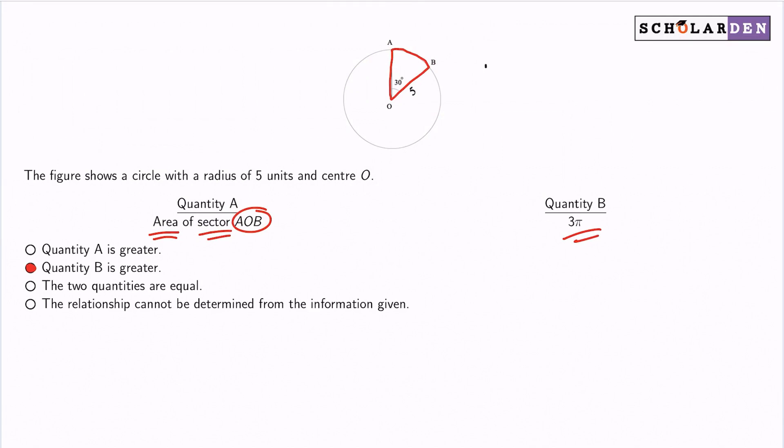We're dealing with a circle. And so the area of a circle is equal to πr², where r is the radius. Now, we have 30 degrees here. So if you can't see it, that's 30 degrees.